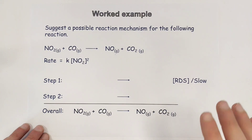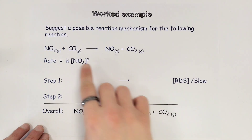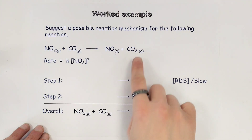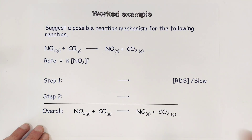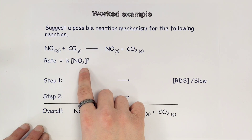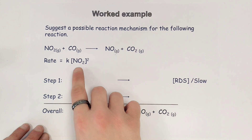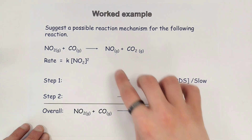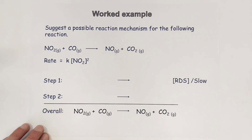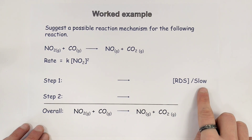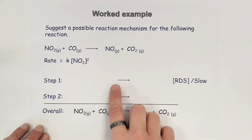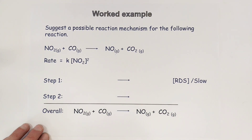I'm going to take you through this worked example. Firstly, this is the overall equation we're looking to reach, and secondly we have been provided with a rate equation which has NO2 (nitrogen dioxide) which is second order — which does mean that in the rate determining step, or the slow step, we need two molecules of NO2 to be present.